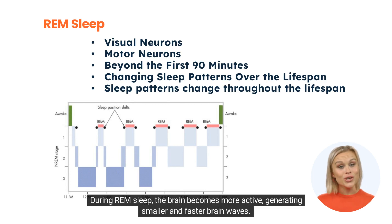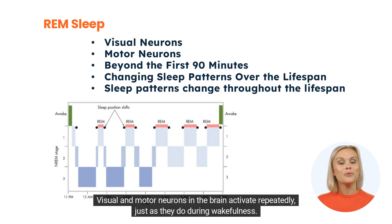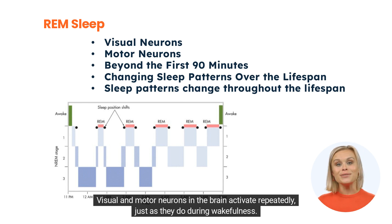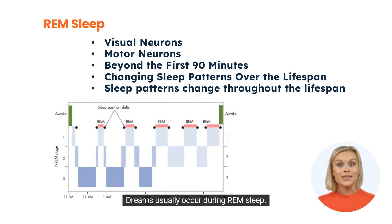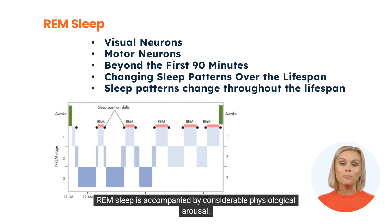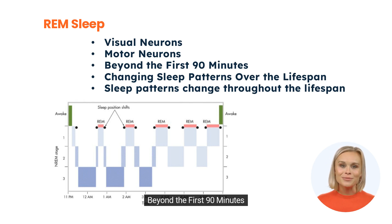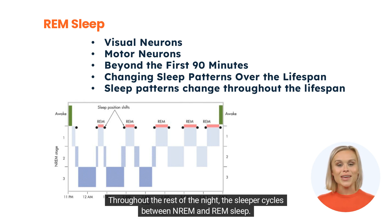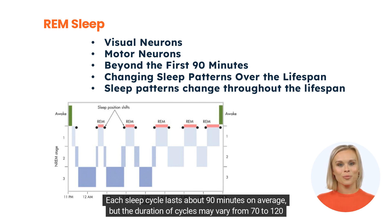REM sleep: During REM sleep, the brain becomes more active, generating smaller and faster brain waves. Visual and motor neurons in the brain activate repeatedly, just as they do during wakefulness. Dreams usually occur during REM sleep, and REM sleep is accompanied by considerable physiological arousal. Throughout the rest of the night, the sleeper cycles between NREM and REM sleep. Each sleep cycle lasts about 90 minutes on average, but the duration of cycles may vary from 70 to 120 minutes.